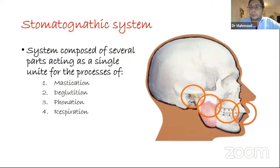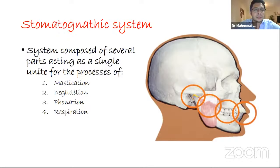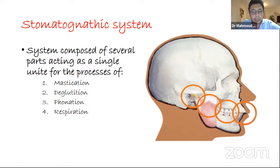Before starting in depth, let's see some basic signs to guide our first step in treatment — the stomatognathic system. Stomato means mouth and gnathic means jaw. The stomatognathic system acts as a single unit for mastication, deglutition, phonetics, and respiration. These components work in harmony with each other, and if any disharmony occurs between them, occlusal disease will be seen obviously.